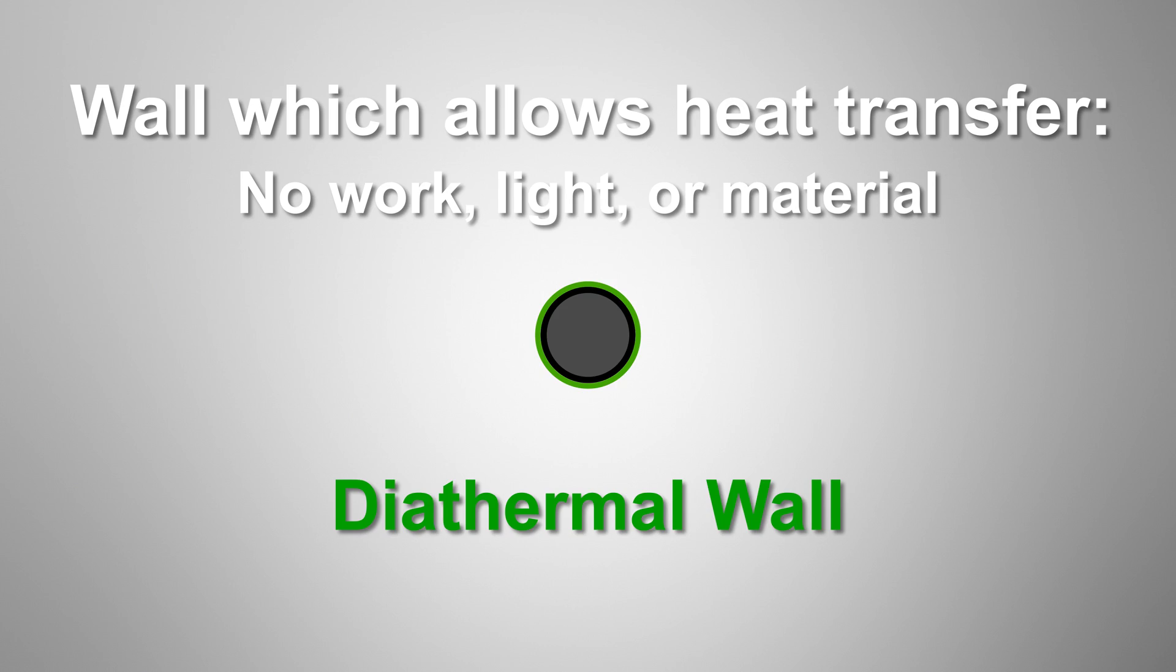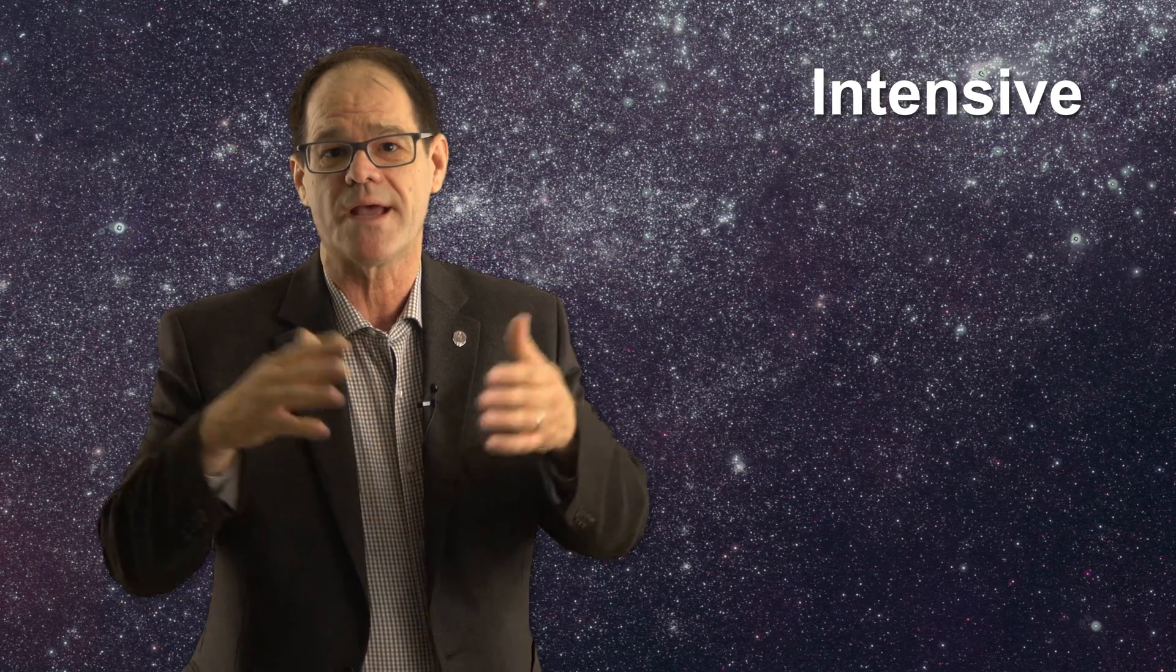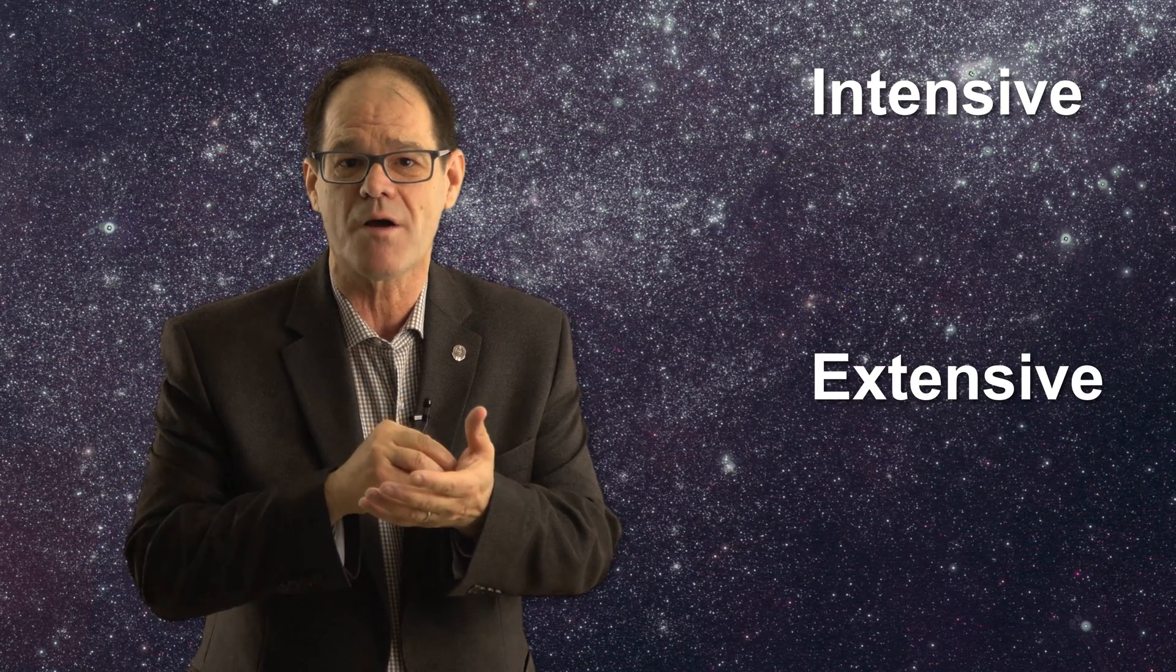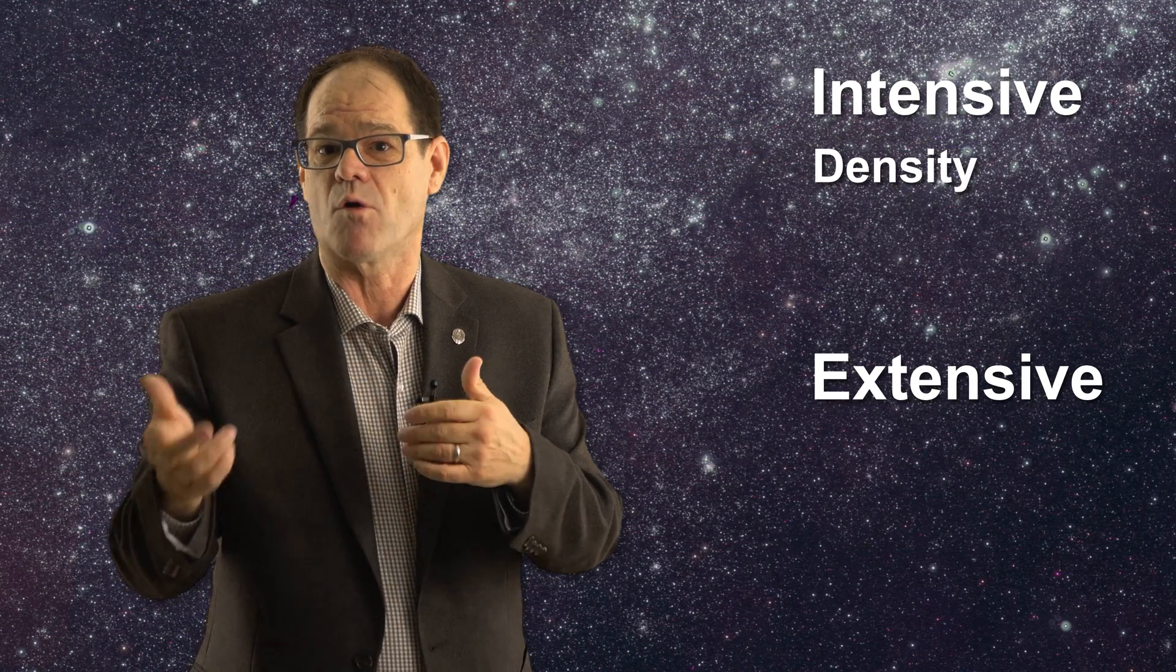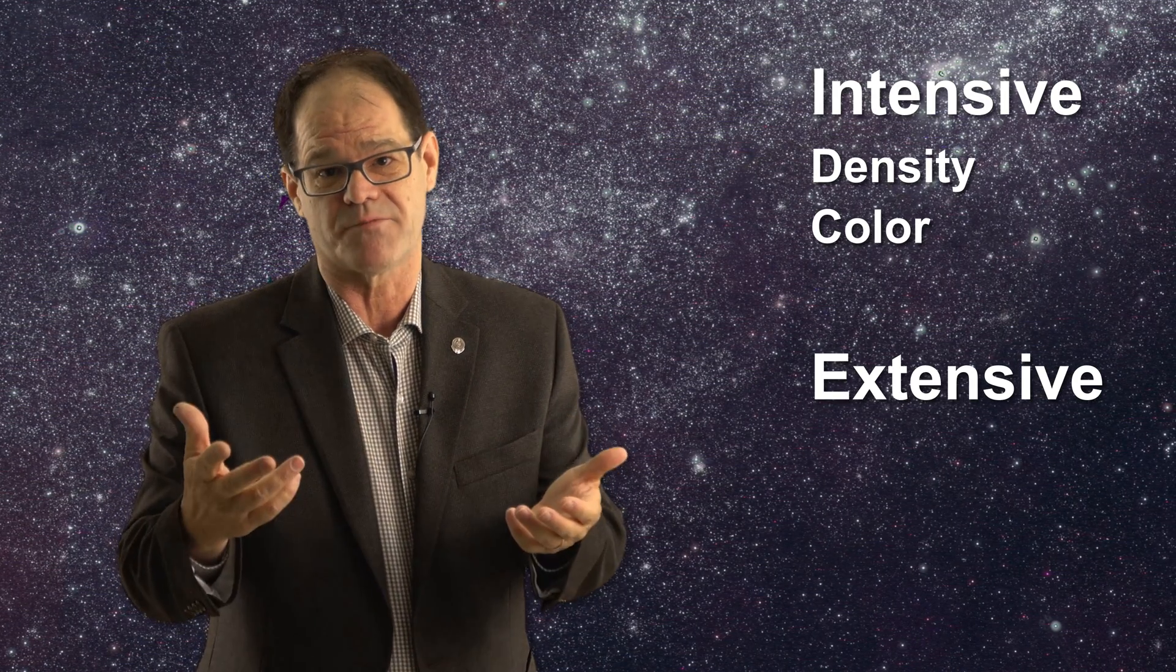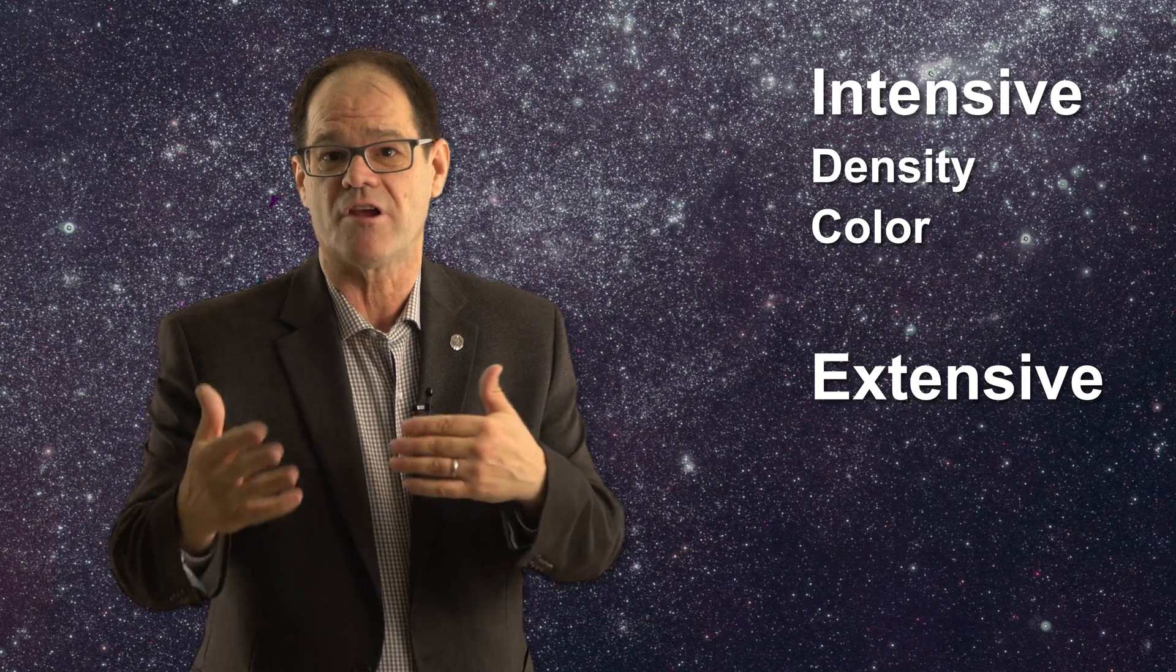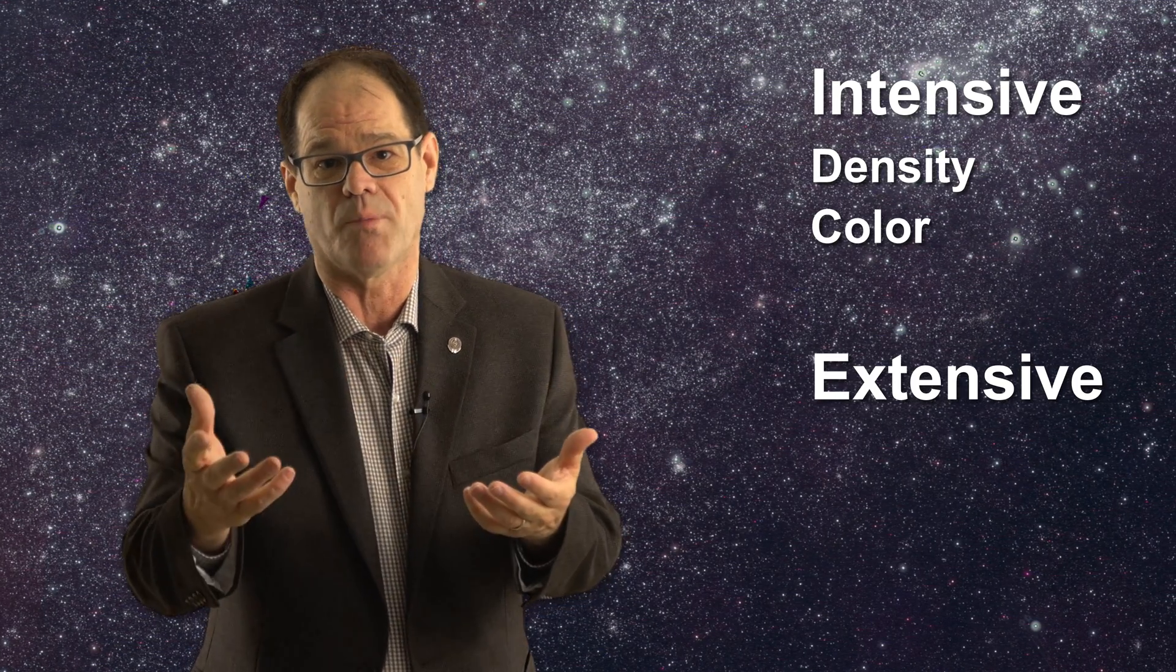Now, let's characterize our system a little bit. We can say that our system has properties which are either intensive or extensive. An intensive property is independent of the amount of material. The density or the color of gold are intensive properties. They don't change if you have a single coin or a gold bar.